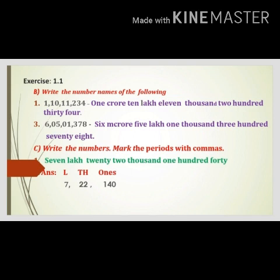Now we move to Division C: write the numbers and mark the periods with commas. In the previous division they gave numbers; in this division they give words. The first: seven lakhs, twenty-two thousand, one hundred and forty. First mark the periods — ones, thousands, lakhs. Seven is in the lakh period, twenty-two is in the thousand period, one hundred and forty is in the ones period. Now put the commas: 7 comma 22 comma 140.